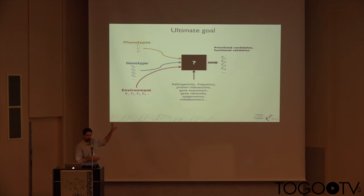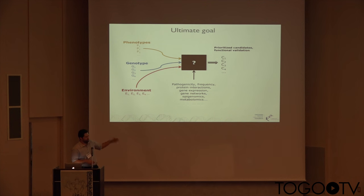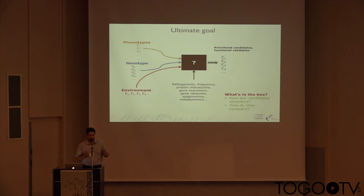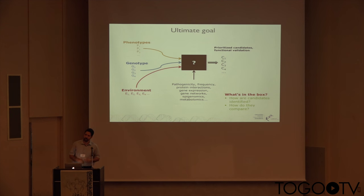In the middle there is a black box containing all sorts of parameters you want to look at — pathogenicity, frequency, gene expression, gene networks, and so on. The main question is obviously what is in that box, and how we can put these things together in a way that allows us to find the one or two variants that are causative of the disorder.